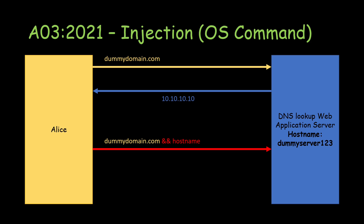Now, along with the dummy domain, Alice also enters a malicious command — an ampersand followed by 'hostname' — because she suspects the server may be vulnerable to OS command injection. The server first performs the DNS lookup on the domain, then also executes the second command — the hostname command — on the server itself. The server's hostname, dummy-server-123, is returned in the response to Alice. OS command injection was successful because the server performed no input validation.